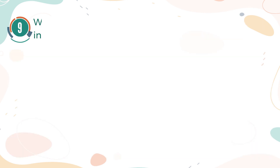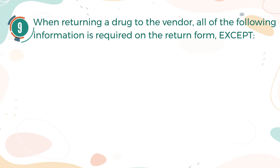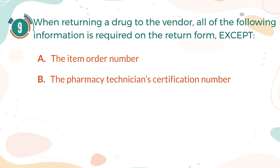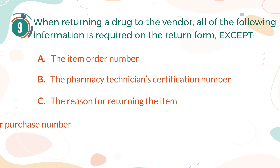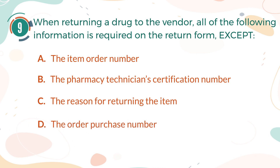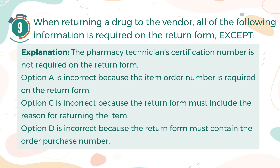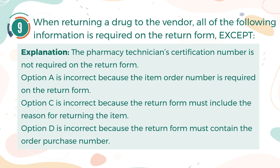Number 9. When returning a drug to the vendor, all of the following information is required on the return form, except: A. The Item Order Number. B. The Pharmacy Technician's Certification Number. C. The Reason for Returning the Item. D. The Order Purchase Number. The correct answer is B, The Pharmacy Technician's Certification Number. Explanation: The Pharmacy Technician's Certification Number is not required on the return form. Option A is incorrect because the item order number is required. Option C is incorrect because the return form must include the reason for returning the item. Option D is incorrect because the return form must contain the order purchase number.